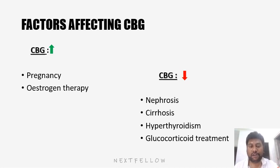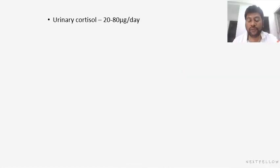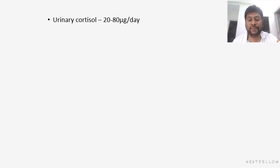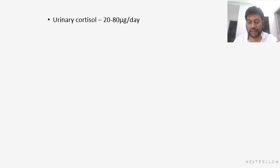We have three different alternate options for confirming adrenal hyperactivity. The first option is going for 24-hour urinary cortisol estimation. When you go for 24-hour urinary cortisol estimation, the question of diurnal variation is ruled out. And since urine cortisol is nothing but free cortisol, the question of cortisol binding globulin is also ruled out. This is a better way to confirm adrenal hyperactivity. If the urinary cortisol level is more than 80 micrograms per day on three different occasions, then you can confirm the diagnosis.